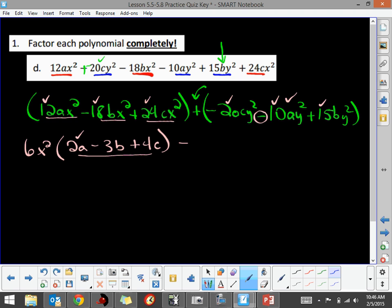And the 20 and the 10 and the 15 have a common factor of 5. So I'm going to take out a negative 5. And we can also factor out a Y squared. Now by factoring out that negative, I should change the signs on all of these that are in here.